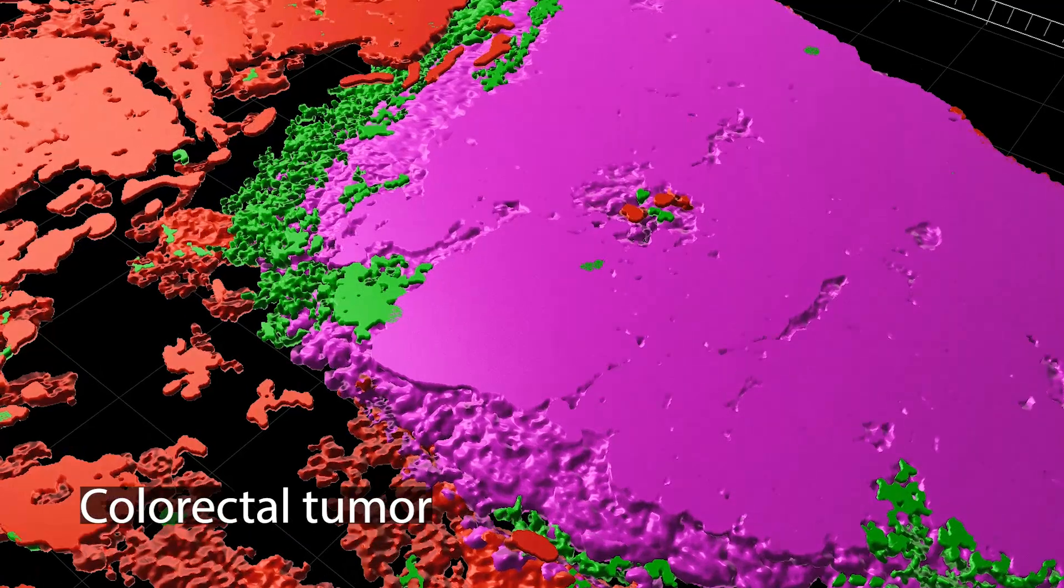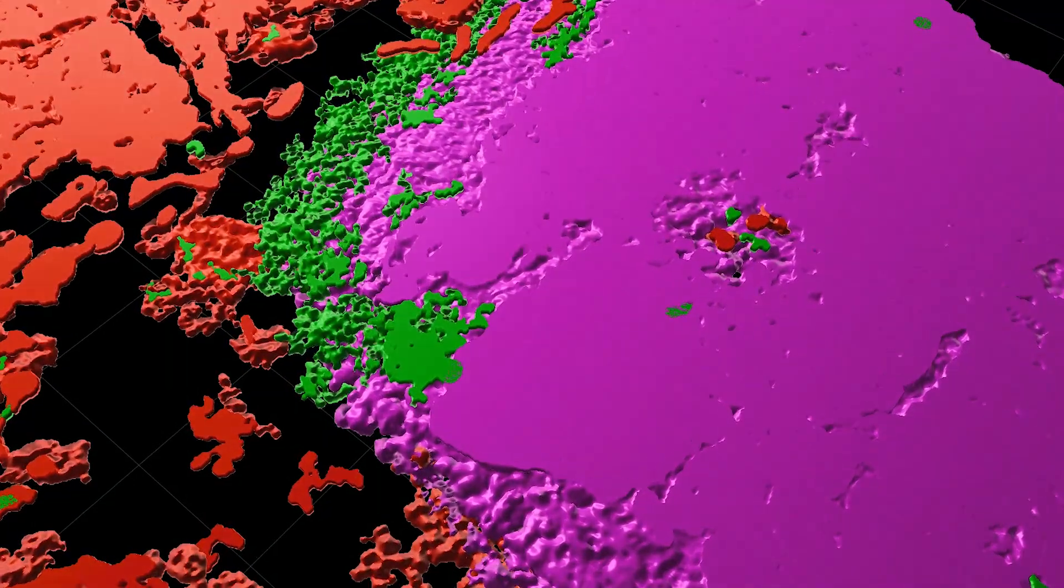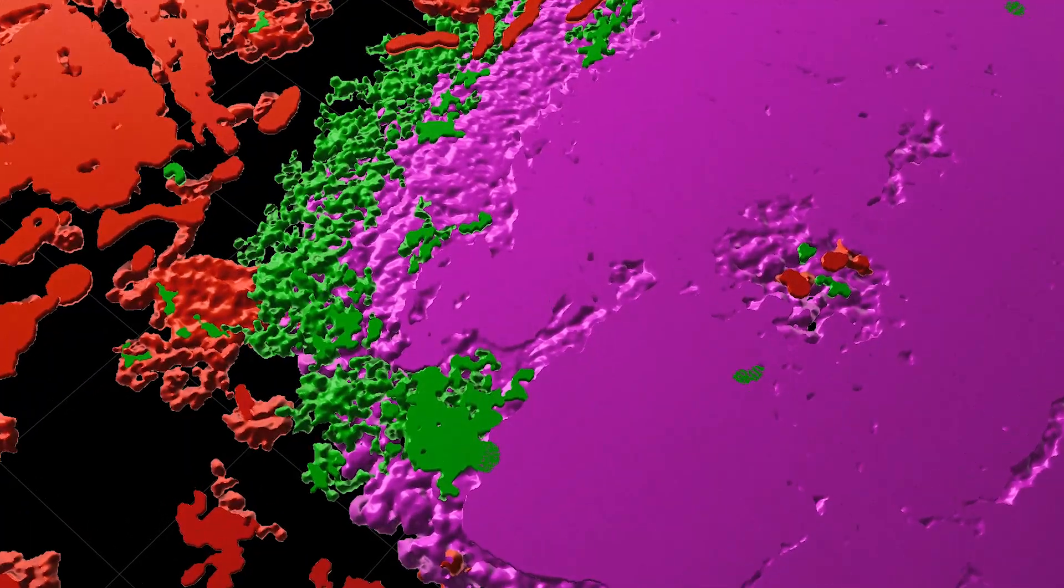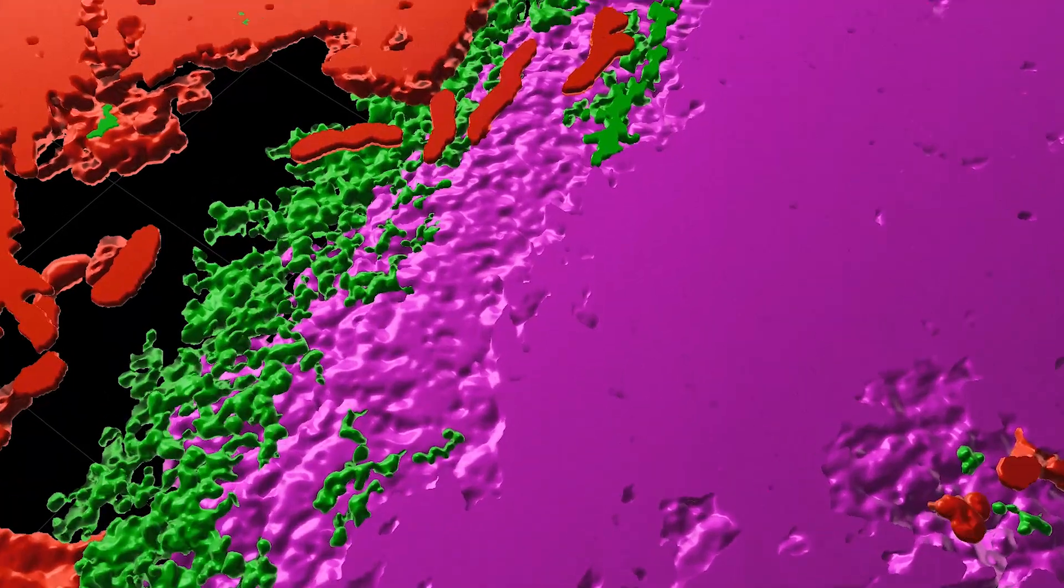Here, a colorectal tumor has spread to the liver. Red cancer cells break through a barrier of green immune cells and invade the healthy pink liver.